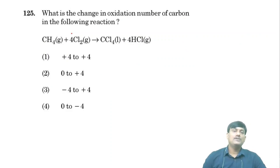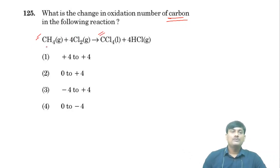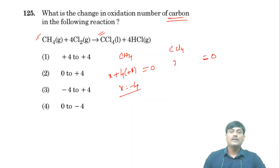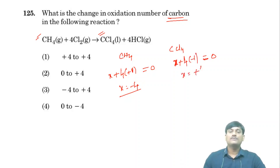What is the change in oxidation number of carbon in the reaction CH₄ → CCl₄? In CH₄, hydrogen has lower electronegativity and gets +1 charge, so carbon has oxidation state −4. In CCl₄, chlorine is more electronegative with charge −1, and with 4 chlorines: 4×(−1) = −4, so carbon has oxidation state +4. The change is from −4 to +4. The third option is correct.